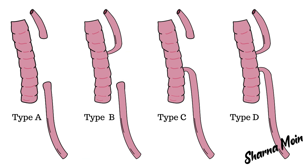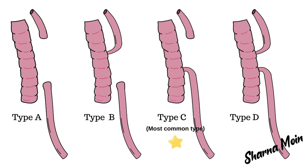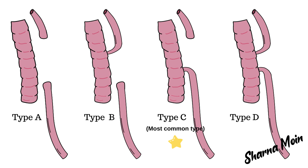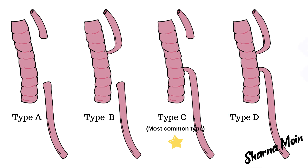Type B is very rare. In this type, the upper part of the esophagus connects abnormally to the trachea, while the lower esophageal pouch ends blindly. Type C is the most common type — here the upper esophageal pouch ends blindly and the lower part of the esophagus connects abnormally to the trachea.